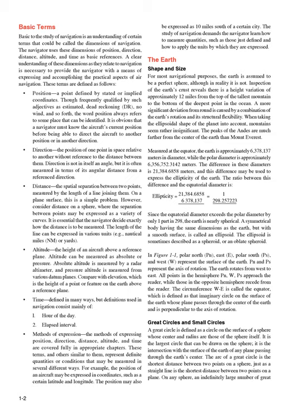A symmetrical body having the same dimensions as the earth, but with a smooth surface, is called an ellipsoid, sometimes described as a spheroid or oblate spheroid. In figure 1-1, polar north (PN), east (E), polar south (PS), and west (W) represent the surface of the earth. PN and PS represent the axis of rotation. The earth rotates from west to east. The circumference WE is called the equator, defined as that imaginary circle on the surface of the earth whose plane passes through the center of the earth and is perpendicular to the axis of rotation.